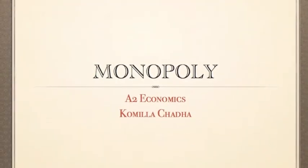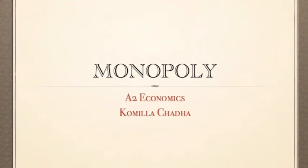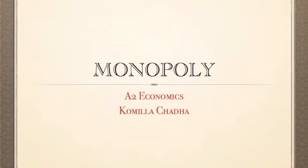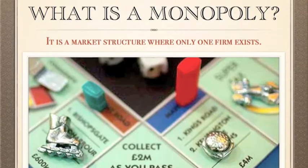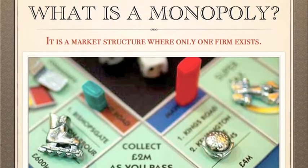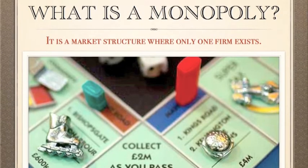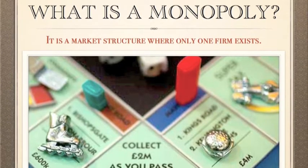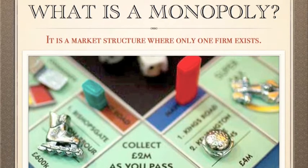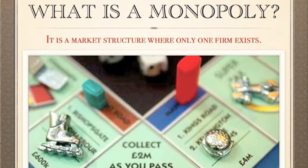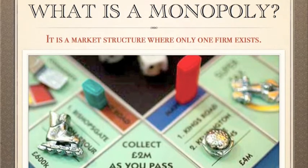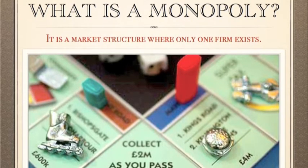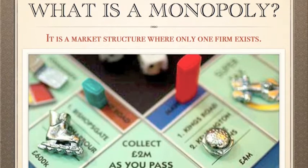Monopoly by Camilla Chudder. A monopoly is a market structure where only one firm exists and many buyers exist. In the UK, any firm with over 25% market share is classed as a monopoly.